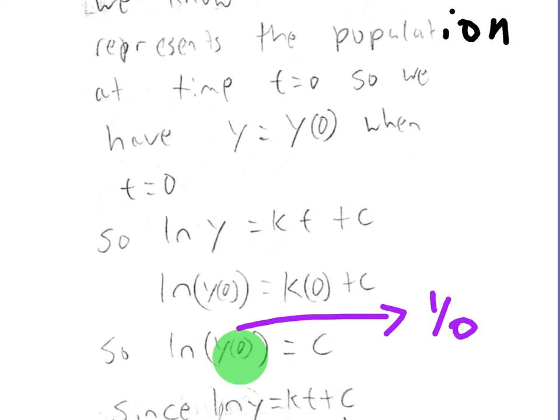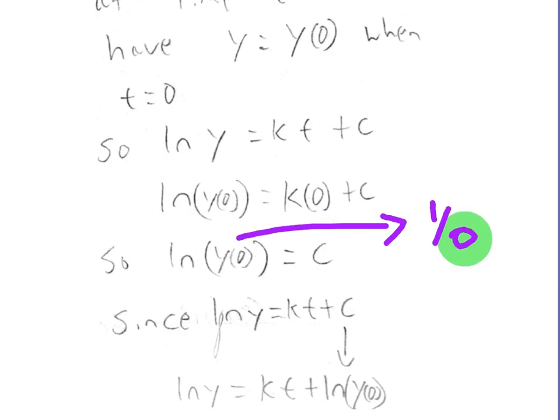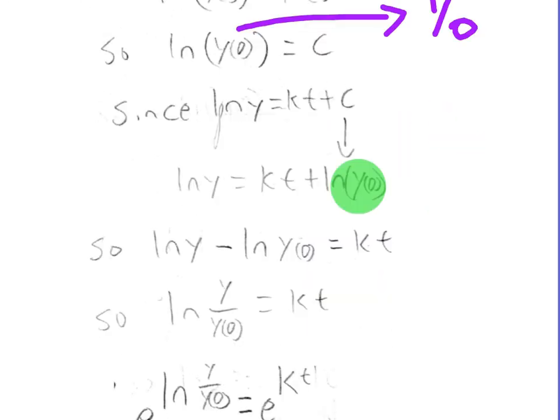Another way you can represent y of 0 is y naught. Now, y naught doesn't mean y, n, of t. It means the initial y value. And you can put the zero out there, below the 0, or the C. But you can put the 0 as a subscript. So since natural log of y equals kt plus C, we can replace this C with natural log of y naught, or natural log of y of 0.